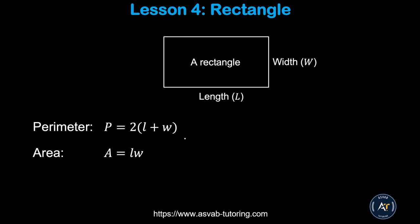First we'll learn how to find area and perimeter of a rectangle. A rectangle is a four-sided shape where opposite sides are the same — this side and that side are the same, and this one and this one are the same. The perimeter is 2 times (L + W) and the area equals length times width.